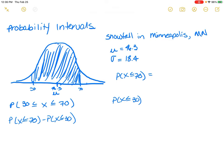So we know that the probability that X is less than or equal to 70 is equal to 70 minus 46.3 over 18.4. And that gives us 1.29. That is the Z score.